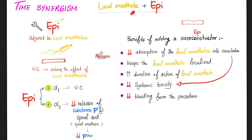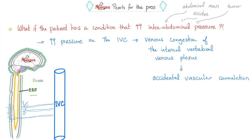Can you add epinephrine to local anesthetic during neuraxial block? Yes. What if the patient has increased intra-abdominal pressure — abdominal mass, tumor, ascites? These conditions compress the inferior vena cava, causing congestion of the internal vertebral venous plexus. So while inserting the needle, it is more likely to hit a congested vessel. Clinically oriented anatomy makes so much sense when explained properly.